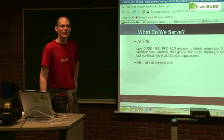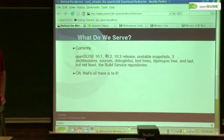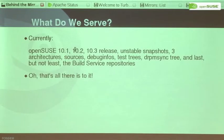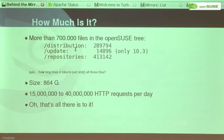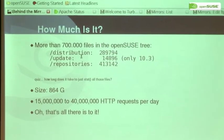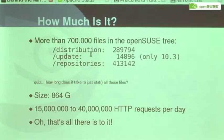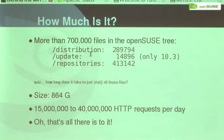What can we serve at OpenSUSE? We have lots of projects like the release distributions — 10.1, 10.2, 10.3 — then there are unstable snapshots, several architectures, sources, debug infos, test trees, and the build service which we've used since recently, which adds a lot to that. All together we have 700,000 files right now in our SUSE tree, and just to list all those files takes a long time. The size adds up to nearly a terabyte, and we also have lots of download requests.